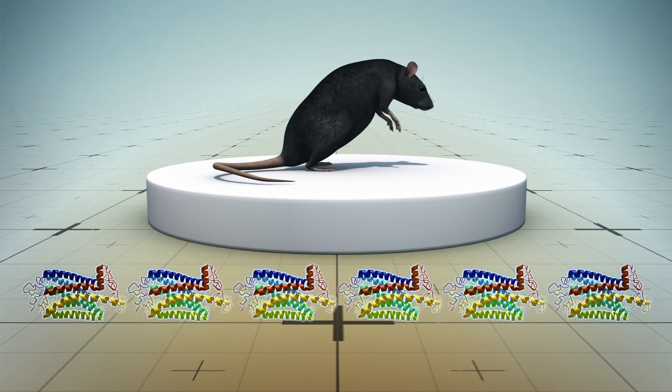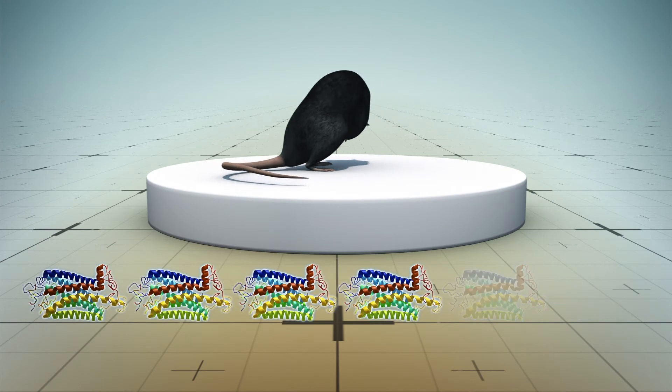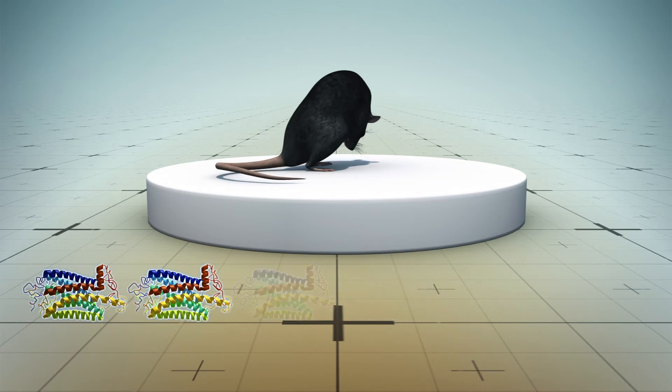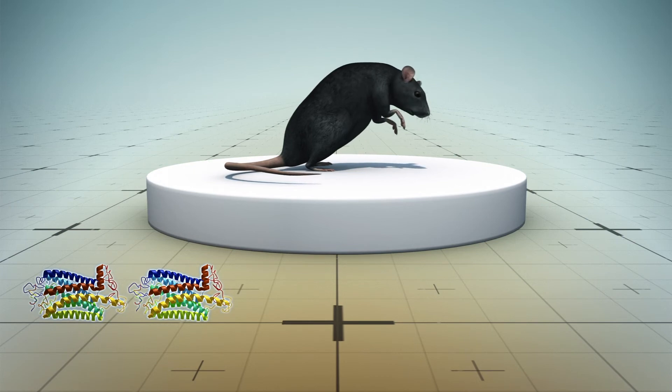Scientists observed that when TAC1 neurons were eliminated, itch-induced scratching also decreased. Stimulating these neurons, on the other hand, resulted in spontaneous scratching behavior even without using histamine and chloroquine injections.